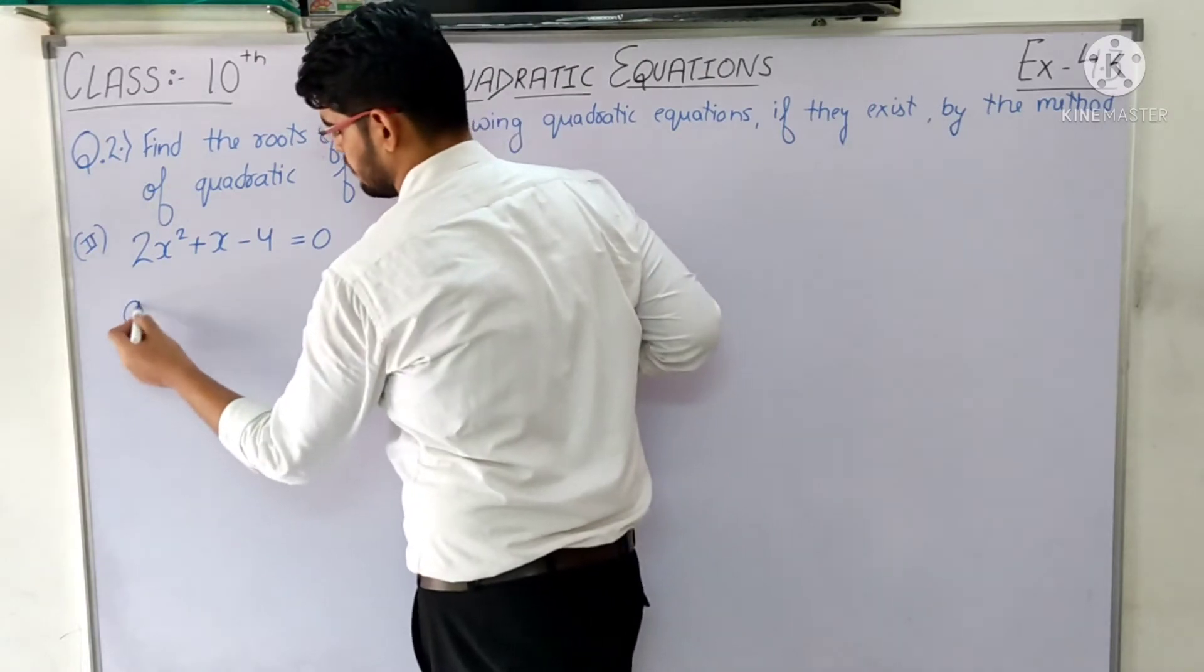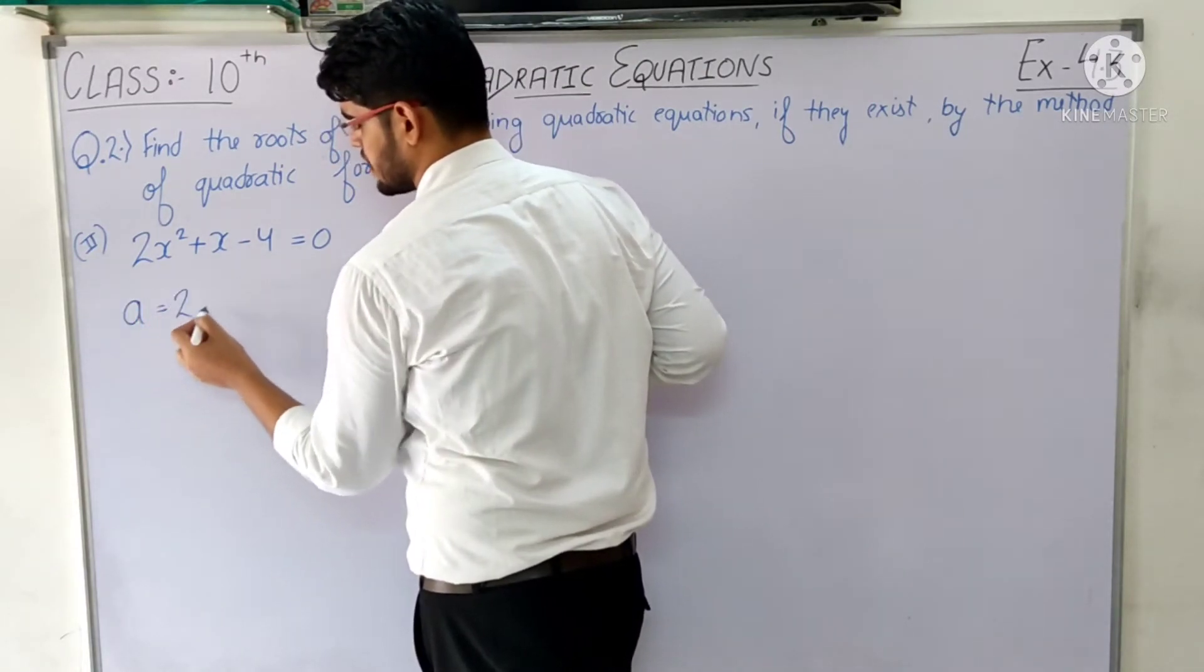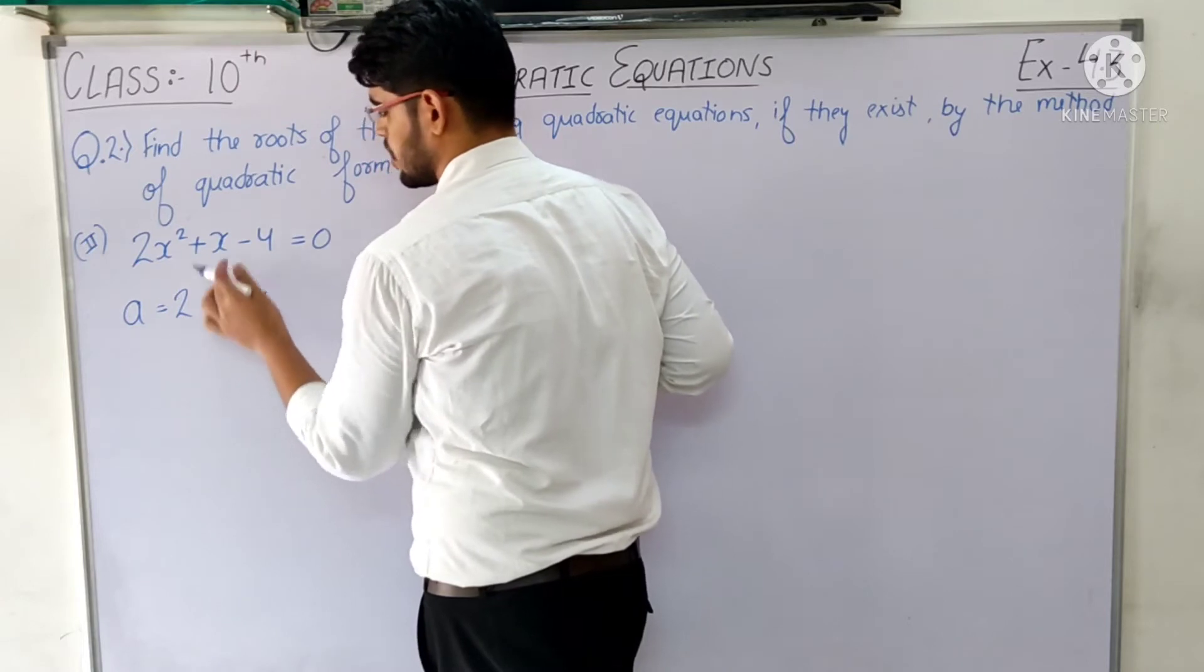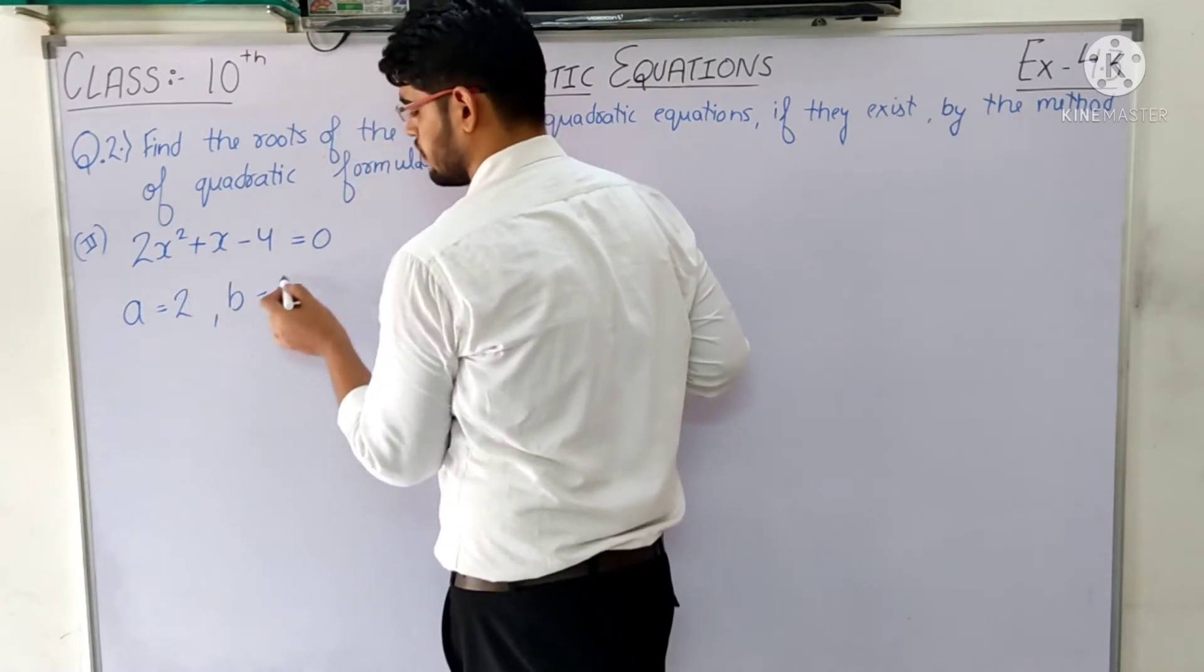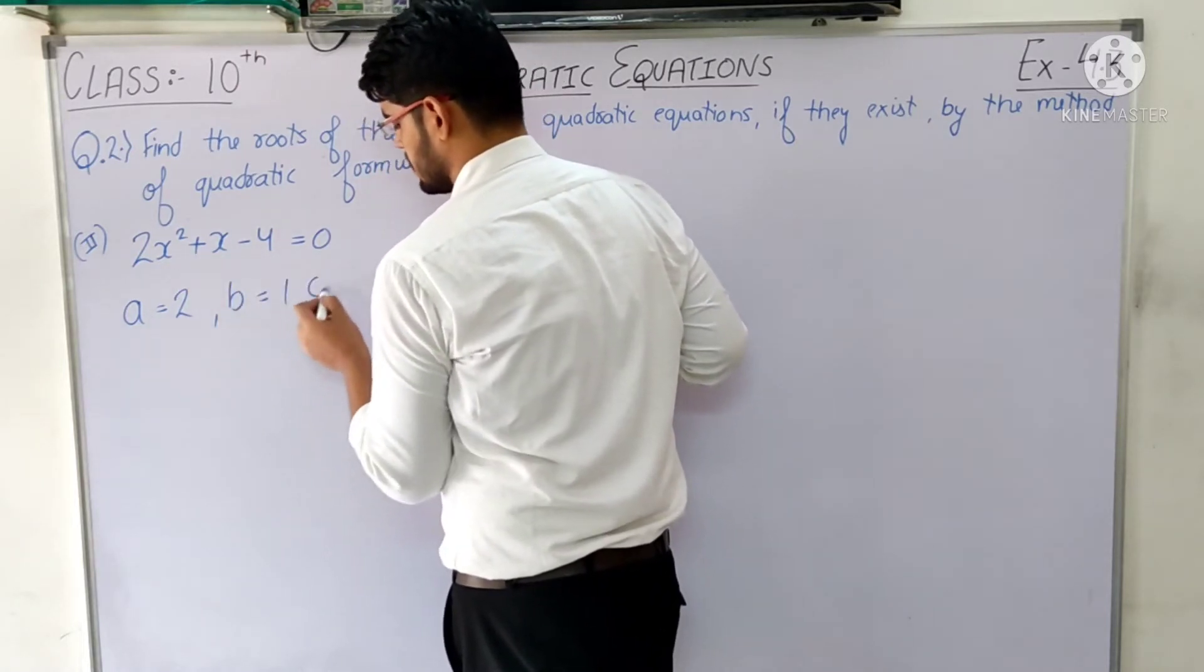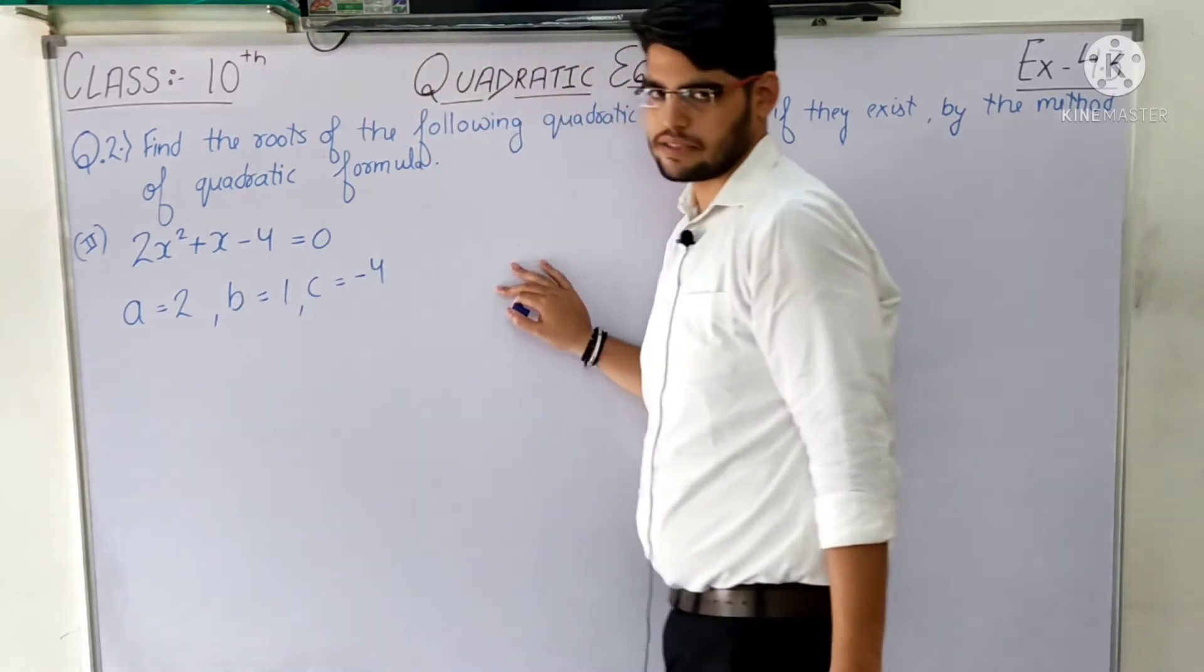Now let's see a, b, and c. What is a? The coefficient of x² is 2. b is the coefficient of x, which is 1. And c is -4, which is the constant term.